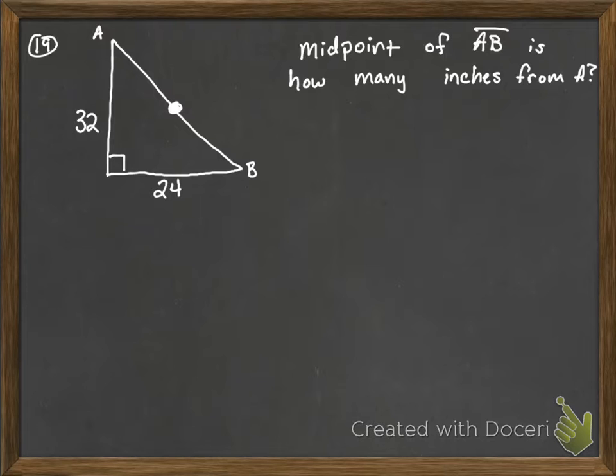So what we need to know is we need to know how long is AB actually, and then if we have that, that will tell us how far the midpoint is from A.